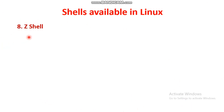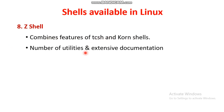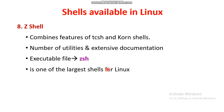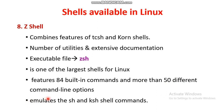The last shell is the Z shell, which combines the features of TCSH and Korn shells. It has extensive utilities and documentation. The executable file is 'zsh'. It is one of the largest shells for Linux, including 84 built-in commands and more than 50 different command line options. It also emulates the sh shell commands.